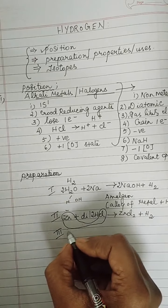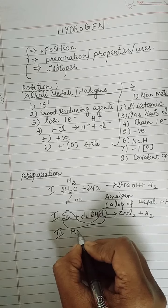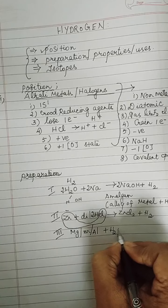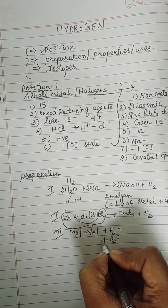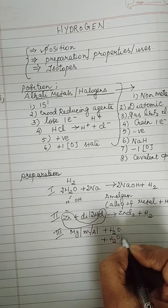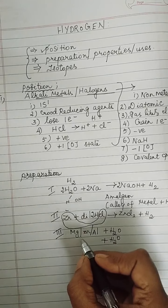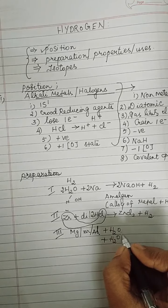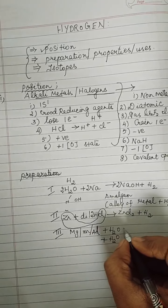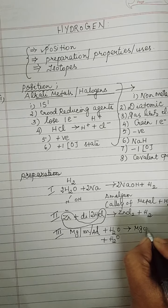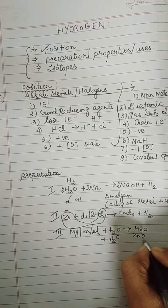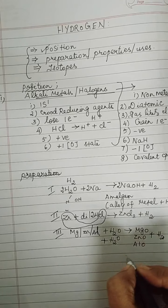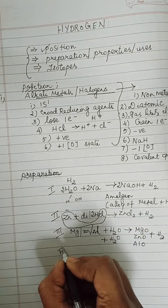The third method: treat metals like magnesium, zinc, or aluminium with hot water or steam. When water is hot or in steam form the formula is still H₂O. The products are the corresponding metal oxides — magnesium oxide, zinc oxide, or aluminium oxide — plus hydrogen.